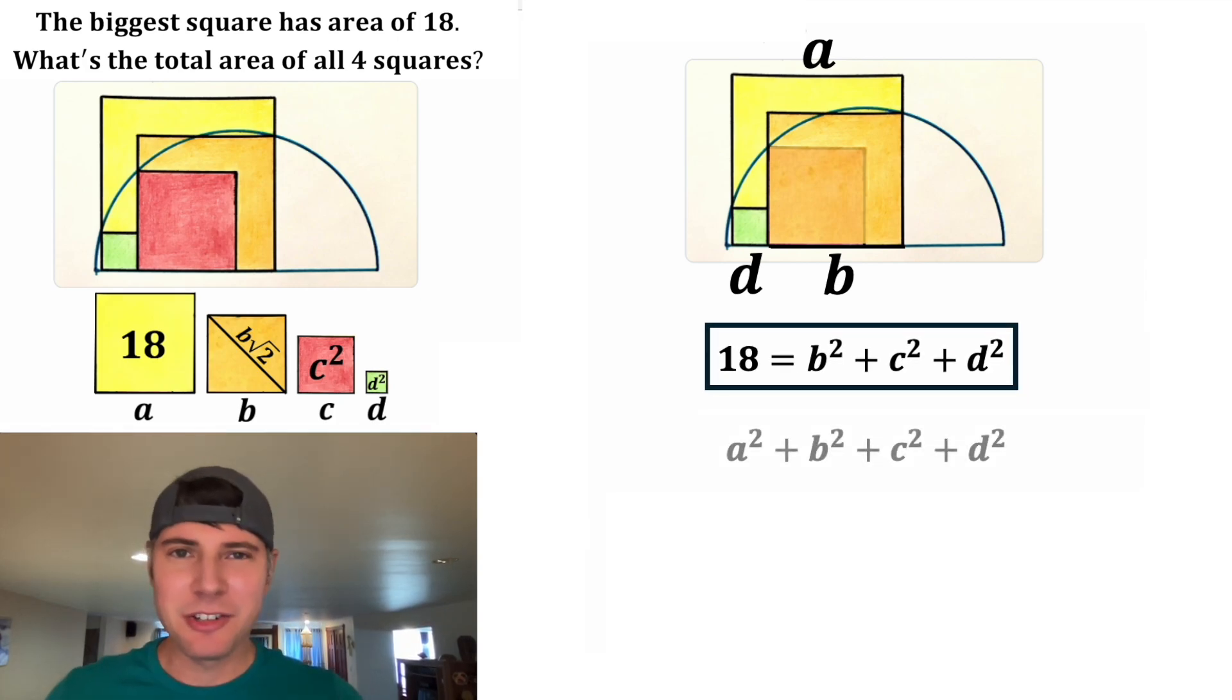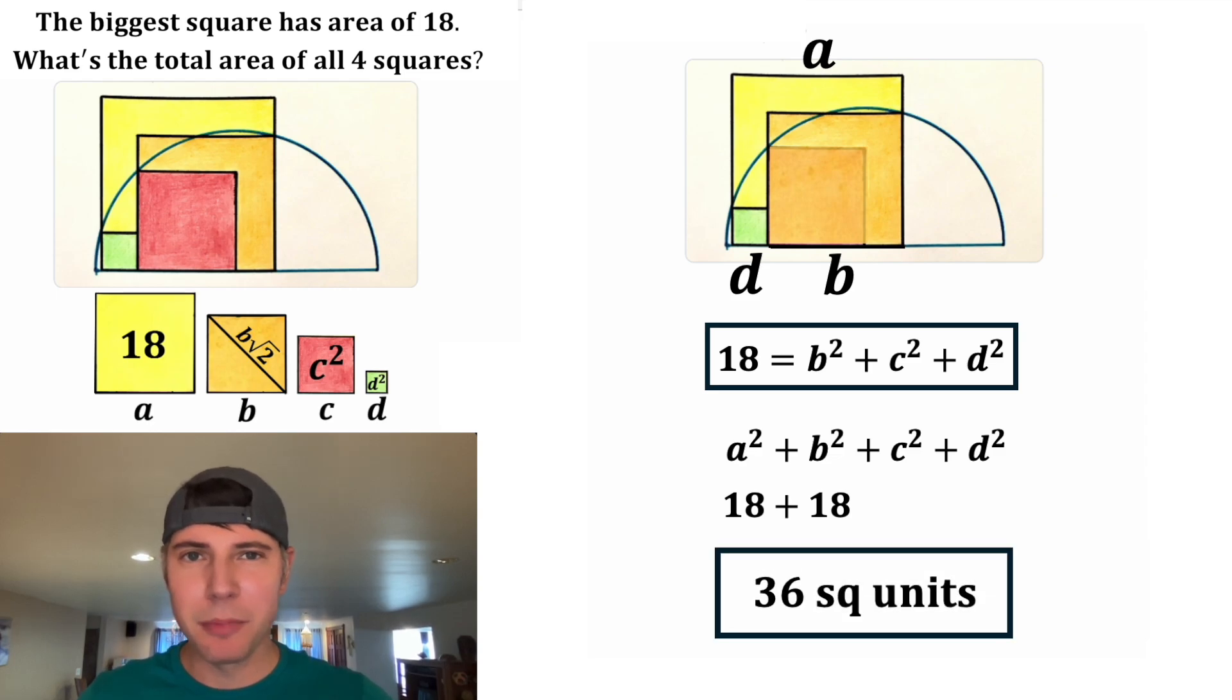Now we're ready to answer the question. A squared plus B squared plus C squared plus D squared. A squared we know is equal to 18. And B squared plus C squared plus D squared is also equal to 18. And 18 plus 18 is equal to 36. Let's give it a label of square units and put a box around it. We have now answered the question. The area of these four squares is equal to 36 square units. How exciting. I really love how this problem all came together. I think it was brilliant.